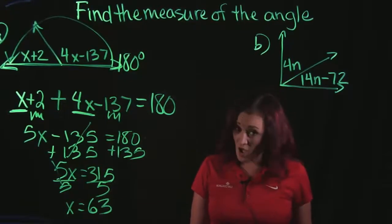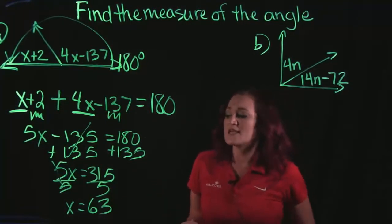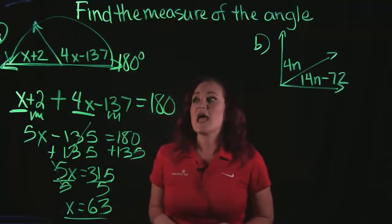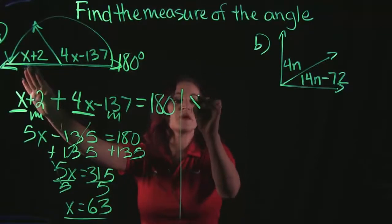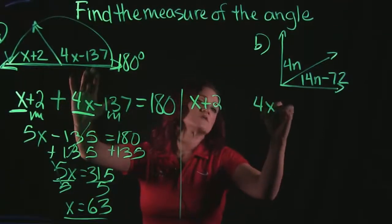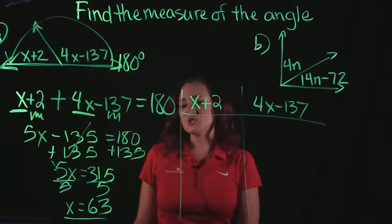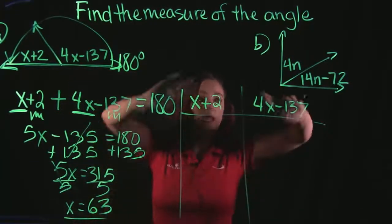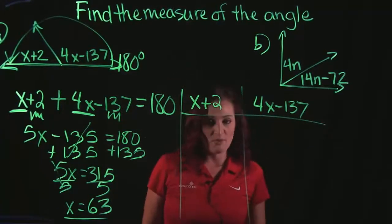Now, our answer is not 63. That is not the measure of the angle. But what that did is that gave us x. And what we need to do is we need to go back to our problem and remember that one of our angles is x plus 2, the other angle is 4x minus 137. So what we're going to do is we're going to take this x and we're going to plug it in and figure out what our angle measures are.